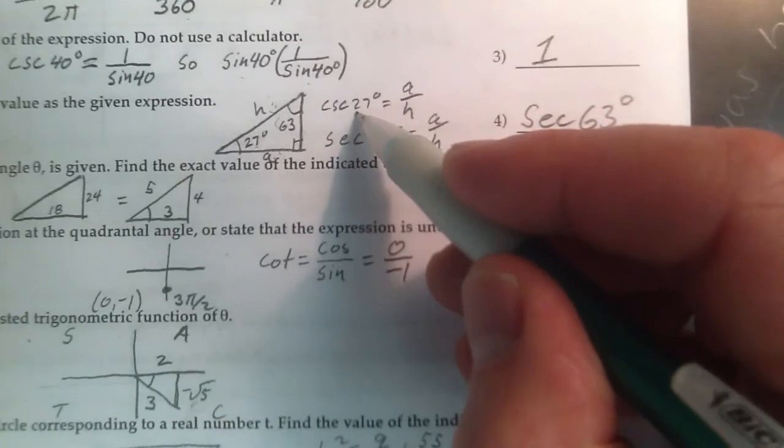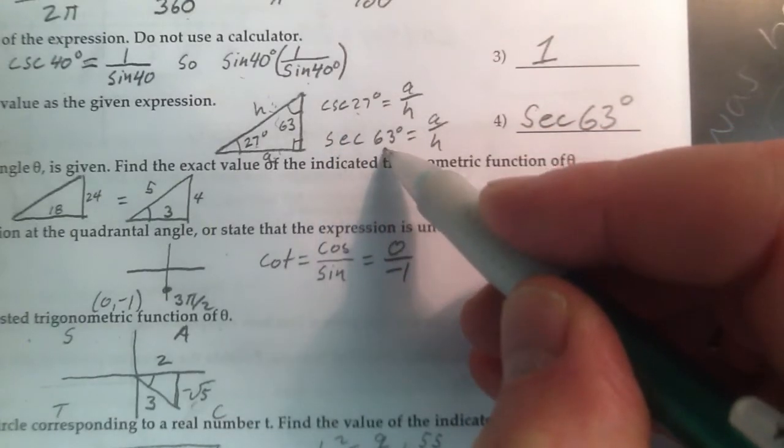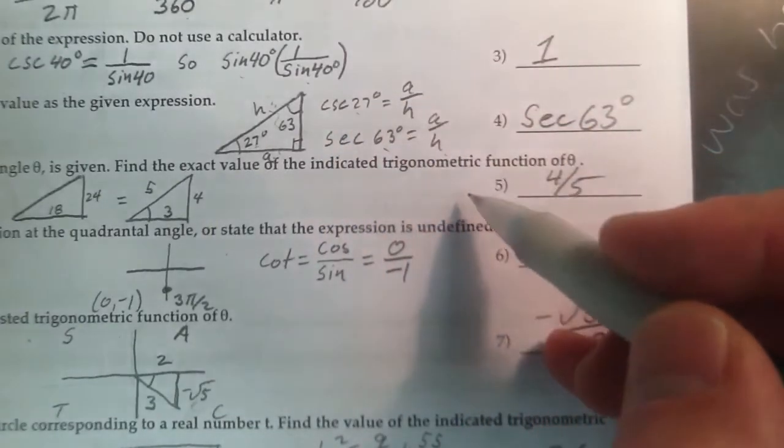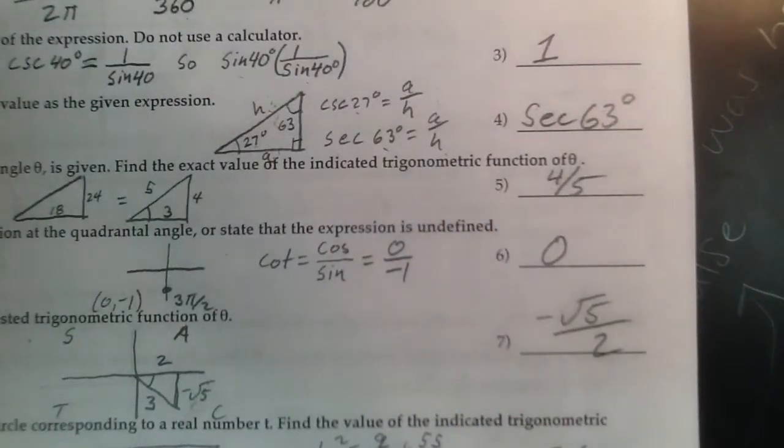So this guy and this guy will give me the exact same number or ratio. Another way to do it is you memorize your cofunctions.